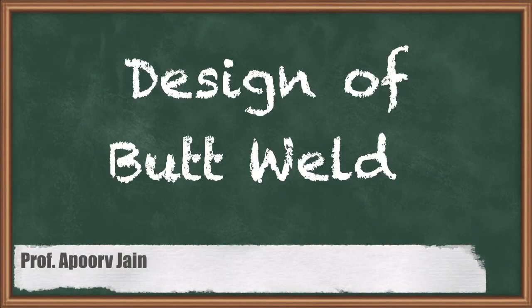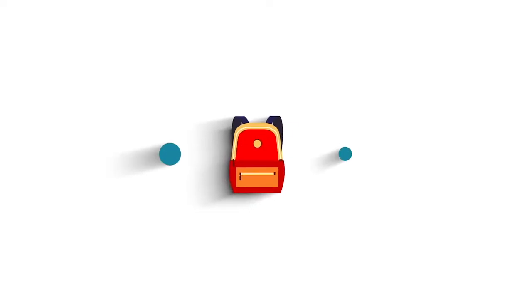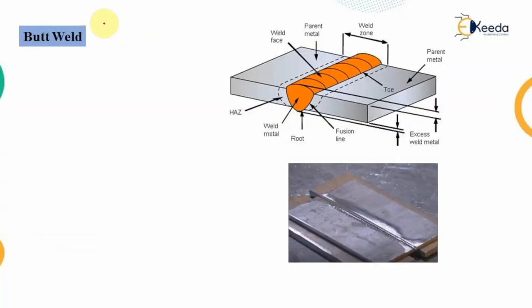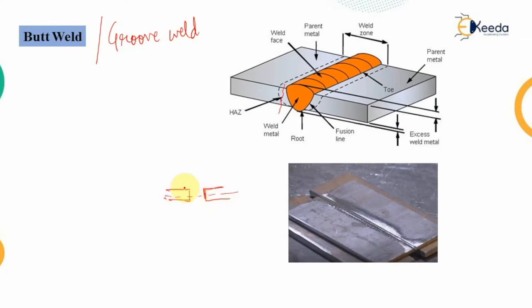In this video we are going to study the design of butt welds, which are also known as groove welds. A butt weld or groove weld is provided when the members to be connected lie along the same line — that means linearity is present between the connecting members. Both plates are in the same line of action, and to fill the gap between them we provide the groove weld, filling the groove present between the connecting members.